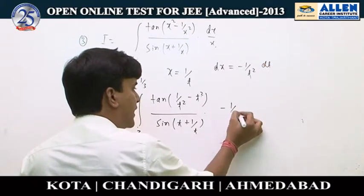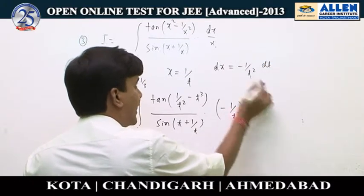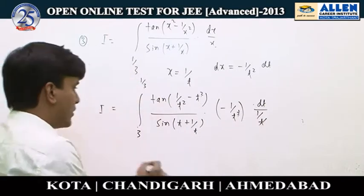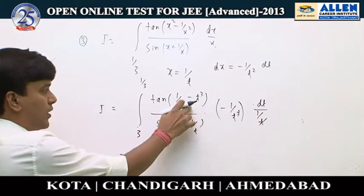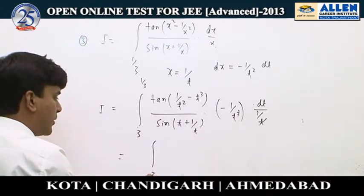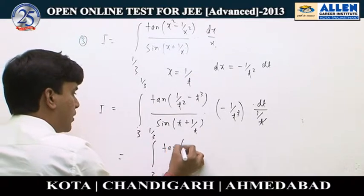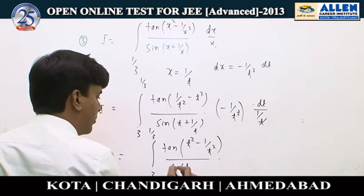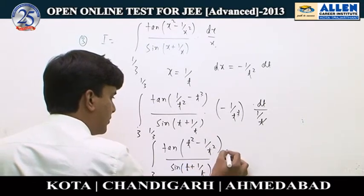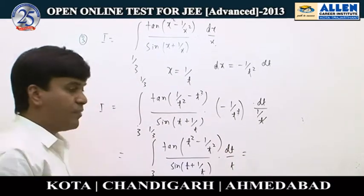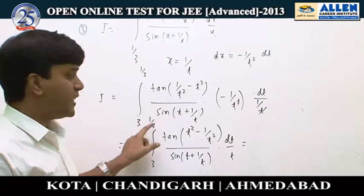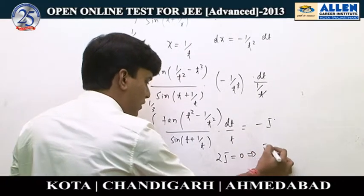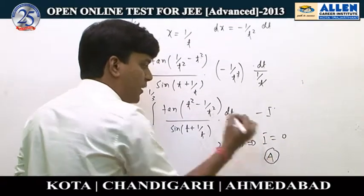Substituting, the −1/t² and the x = 1/t simplify, and after cancellation we get the integral from 3 to 1/3 of (t² − 1/t²) / sin(t + 1/t) · dt/t. Comparing this transformed integral with the original I, the limits are interchanged, so this equals −I. Therefore 2I = 0, and the value of I is 0.